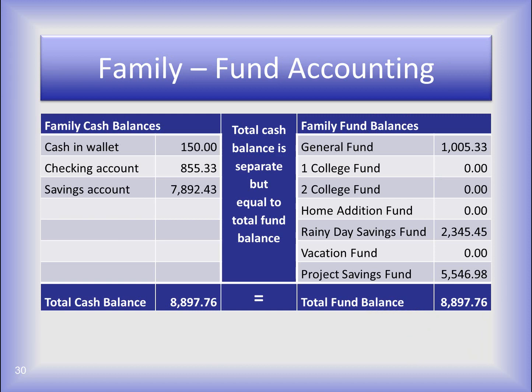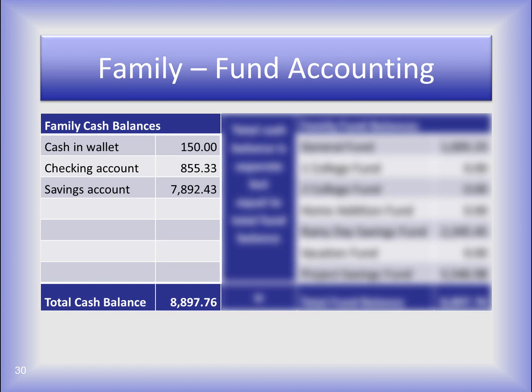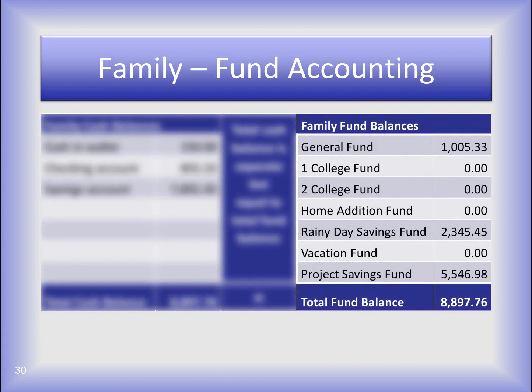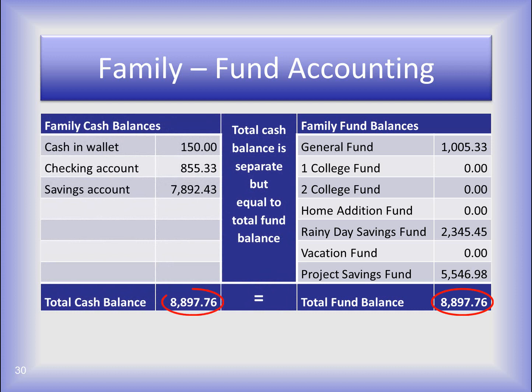Here's a sample chart showing the family's plan using governmental fund accounting. On the cash balance side, they've combined the two savings accounts into one account. In fund accounting, you don't need separate bank accounts for funds — you invest cash, not fund balances, to get a better rate of interest. So they have the checking account and one savings account; added together, it's their total cash balance. On the fund side at the right, they've established funds and divided the cash balance among them: a general fund, two college savings funds, a home addition fund, a rainy day savings fund, a vacation fund, and a project savings fund. Each fund has a beginning fund balance, some starting at zero. The total fund balance equals the total cash balance.